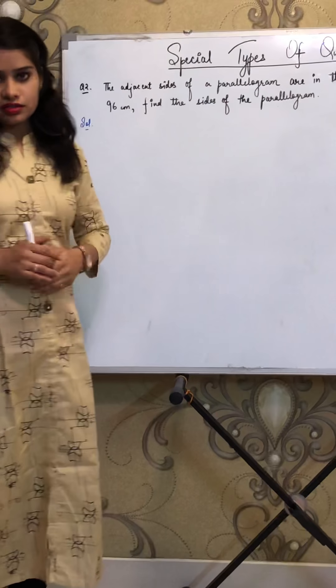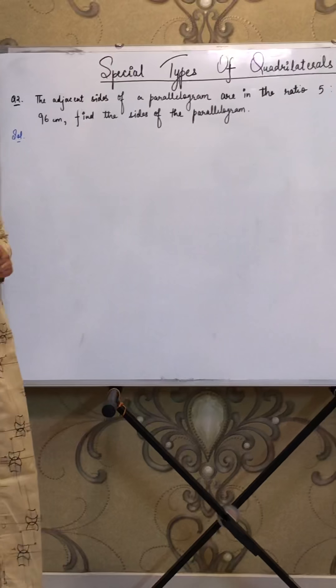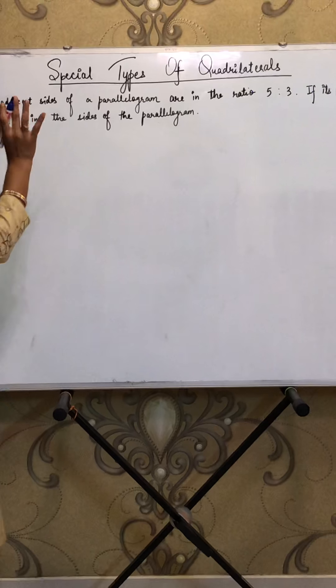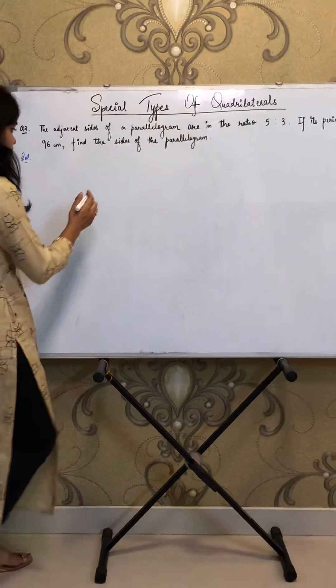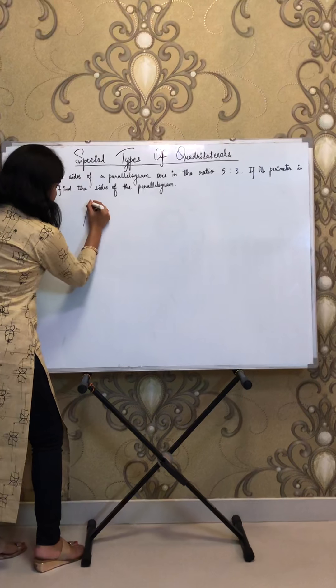The adjacent sides of a parallelogram are in the ratio 5 is to 3. So first of all, by reading the first sentence of the question, I am making a parallelogram.